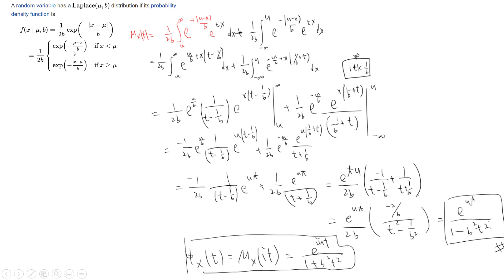When x is less than µ, the density is exponential (µ minus x) divided by b. When x is greater than or equal to µ, it is exponential negative (x minus µ) divided by b. So let's talk about the moment generating function — we integrate exponential tx from µ to infinity, and from negative infinity to µ. This is the integral, and the rest is just doing the detailed computation.